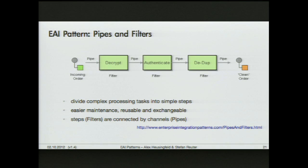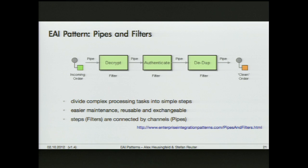A question was raised about what these pipes are — whether they are JMS queues or something like that. The name 'pipes and filters' is quite abstract for a reason. Using JMS queues is one option, but not the only one — it depends on your requirements. For a simple snippet like the one shown, using JMS queues would be a bit heavyweight; you would just use simple in-memory pipes. But it's a matter of configuration to switch that to JMS queues. You can also apply non-functional properties like throttling or even a delay to those pipes.